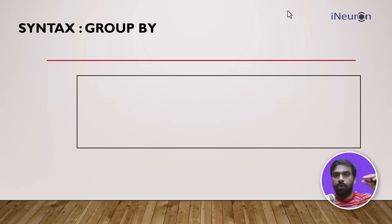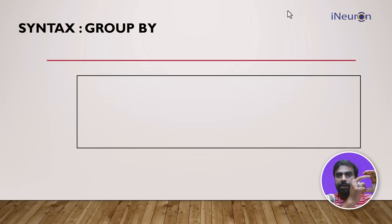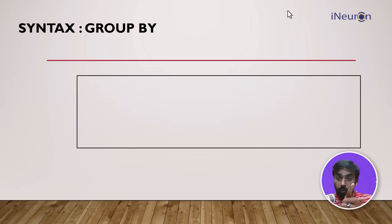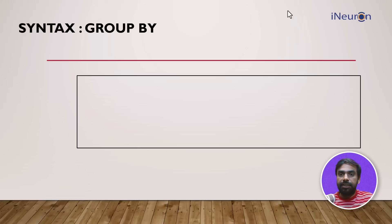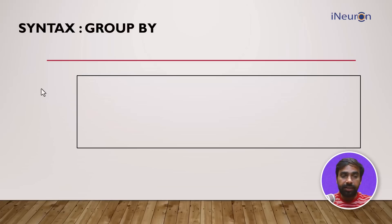What GROUP BY does is group data points that share a common attribute. For example, all clothes that were gifted get grouped together into one particular row, and it gives you a count, average, or any other aggregate of how many clothes were bought or gifted. Let me start with the syntax first and then we'll see how it is done in SQL.